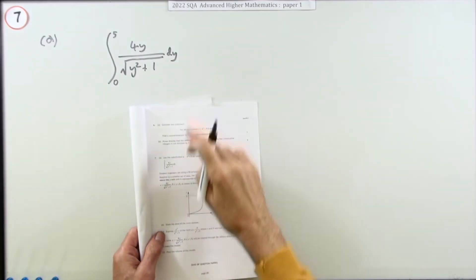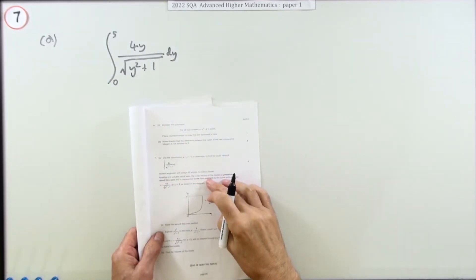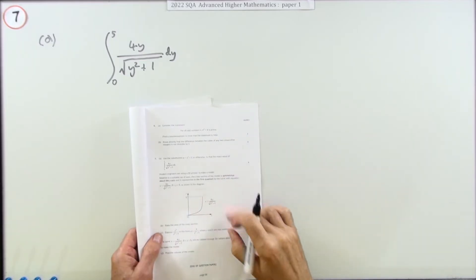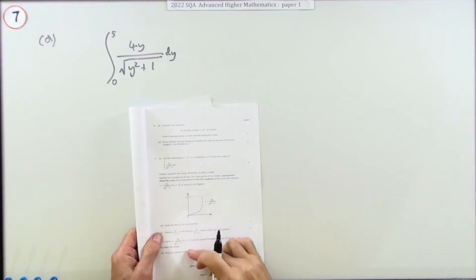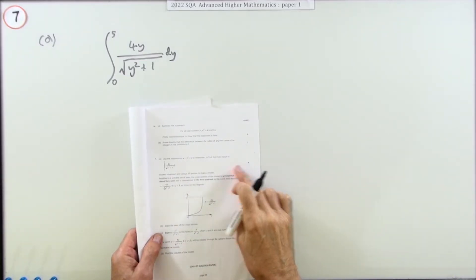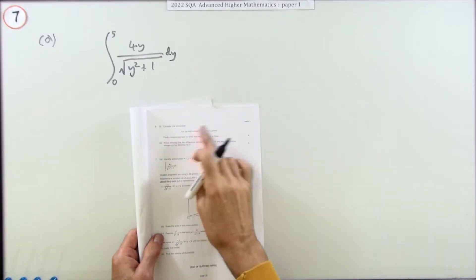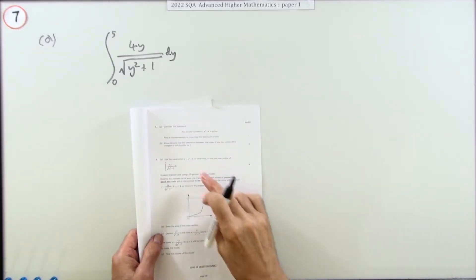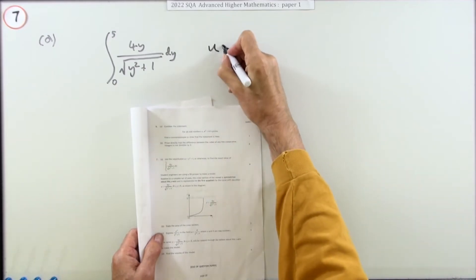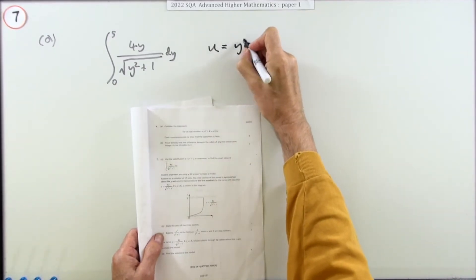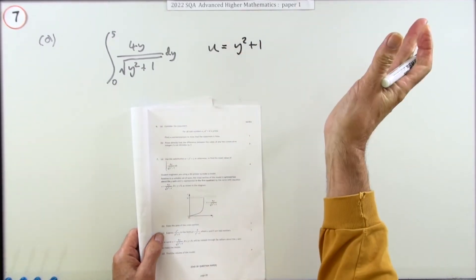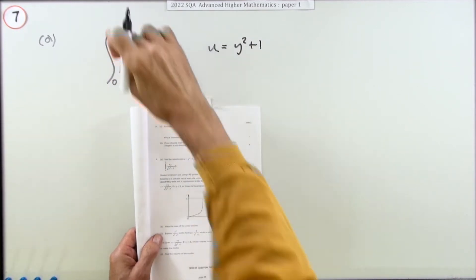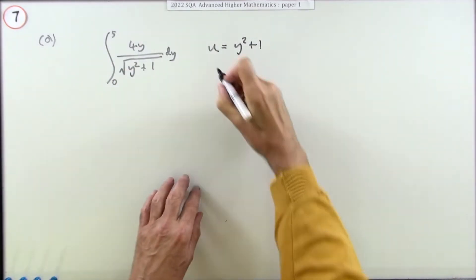Question 7 from the 2022 Advanced Higher Paper 1, 4114 — it's a 10-mark question. The first part is integration for four marks: use the substitution u equals y squared plus one, or otherwise, to find the exact value of this definite integral.